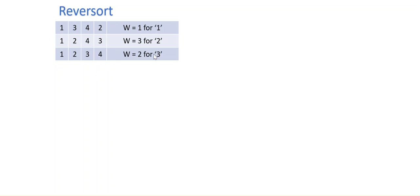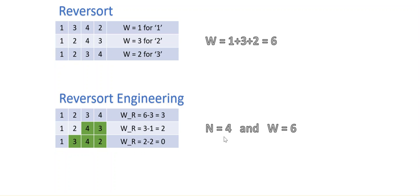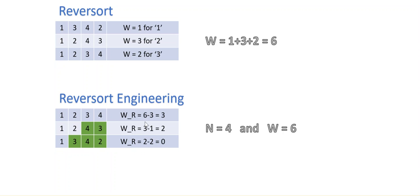When they give you work and n, for example n=4 and w=6, you approach it in reverse order. First set up [1,2,3,4]. Since every iteration has a minimum work of one, for a four-element series the total minimum work is n minus one = three. So if they give work=6, you subtract three: 6 minus 3 equals 3 remaining work. Then you start reversing from the end.